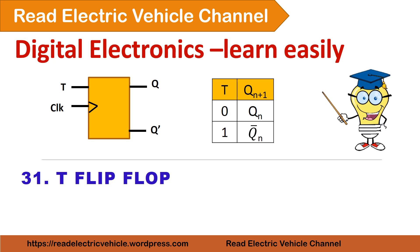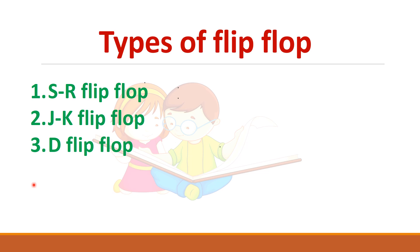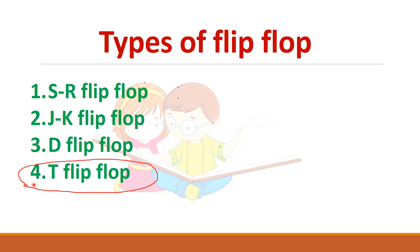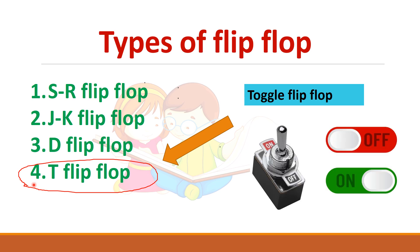In this video, let us see about T flip-flop. There are four different types of flip-flop: SR flip-flop, JK flip-flop, D flip-flop, and T flip-flop. Here we are going to see about this toggle flip-flop which is called as T flip-flop. This resembles the toggle switch which can be either in the on state or off state, either one or zero. It keeps on toggling.